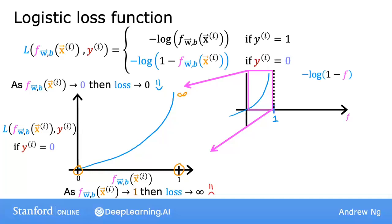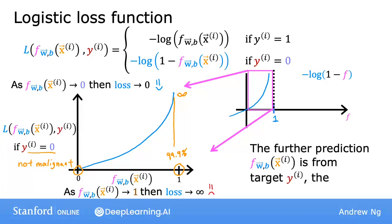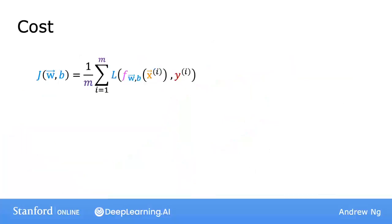Going back to the tumor prediction example, this says that if a model predicts that the patient's tumor is almost certain to be malignant, say 99.9% chance of malignancy, but it turns out to actually not be malignant, so y equals 0, then we penalize the model with a very high loss. So in this case of y equals 0, similar to the case of y equals 1 on the previous slide, the further the prediction f of x is away from the true value of y, the higher the loss. And in fact, if f of x approaches 0, the loss here actually goes really, really large and in fact approaches infinity. So when the true label is 1, the algorithm is strongly incentivized not to predict something too close to 0.